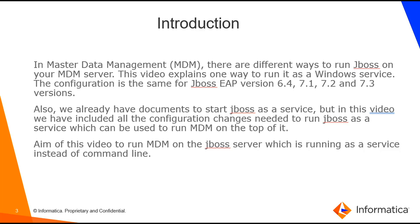The introduction: there are different ways to run JBoss on your MDM server. This video explains one way — running it as a Windows service. The configuration is the same for JBoss EAP versions 6.4, 7.1, 7.2, and 7.3. While there are existing documents on JBoss as a service, this video focuses specifically on the configurations needed for MDM. The aim is to run MDM on JBoss running as a service instead of from the command line.